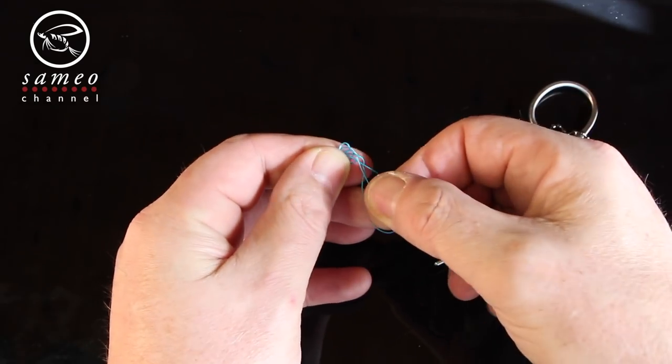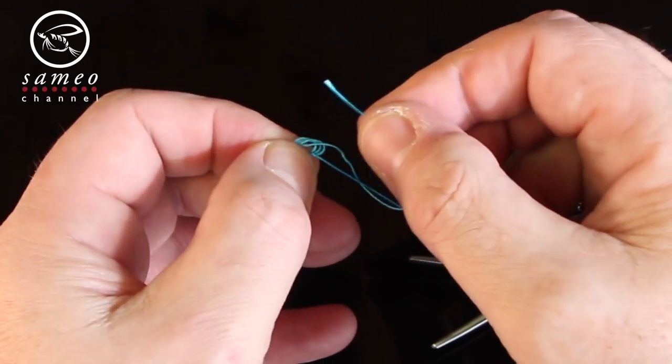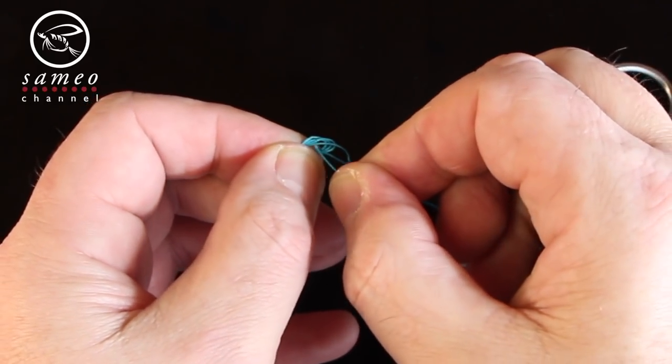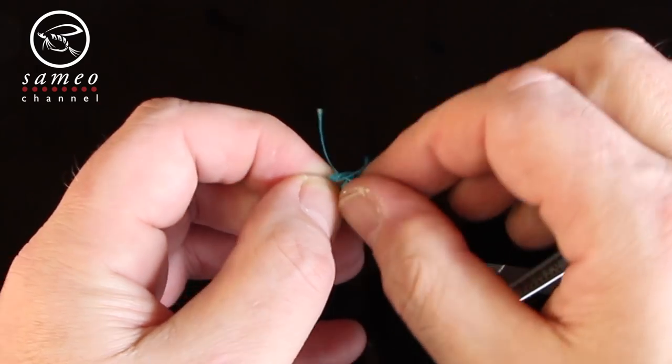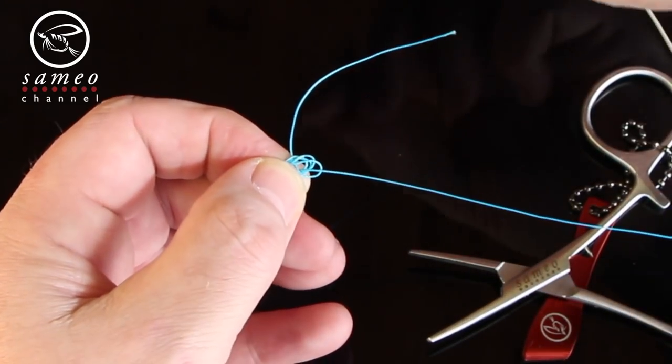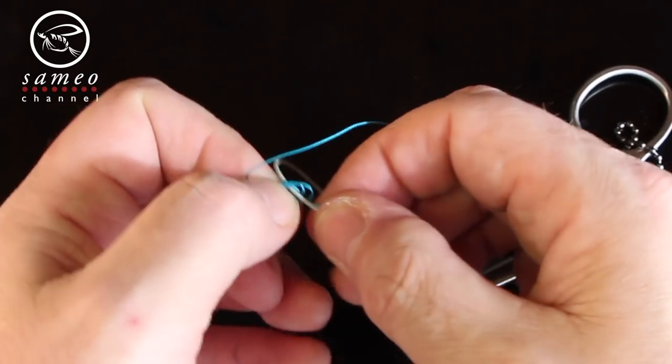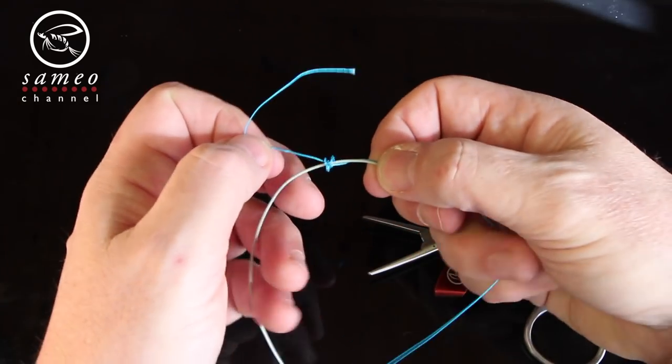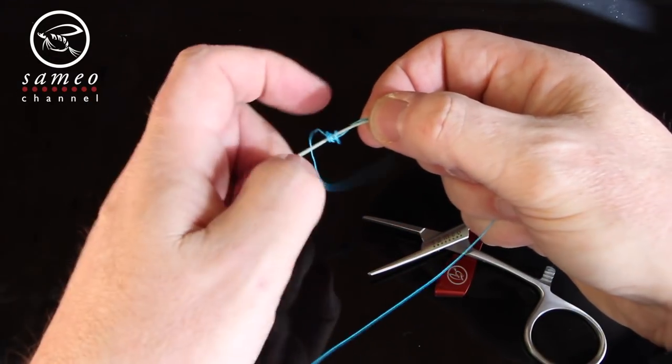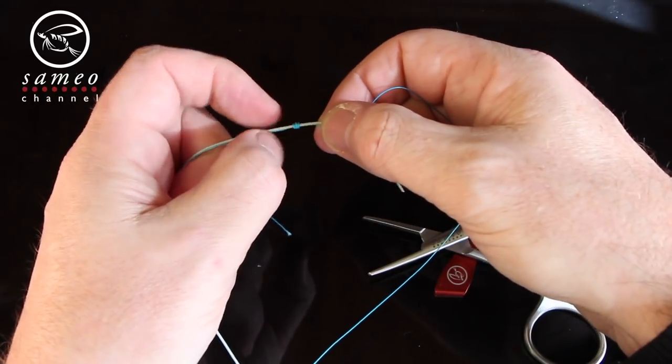Thread the loose end back through the coils. Thread the fly line from the opposite direction. Spread out the coils nice and even while carefully tightening the leader or backing. Use your fingernails to make the coils sit nice and firm.